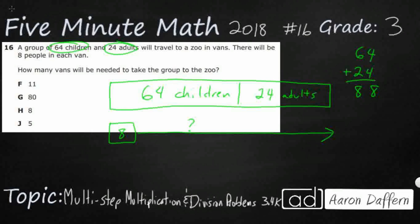And so we're going to need to take our 88, and this is going to be a division problem. We're going to divide because we have eight people in each van, and each is going to give us a clue that we're going to either do multiplication or division.